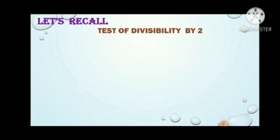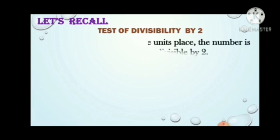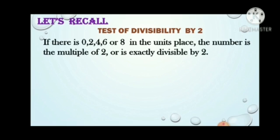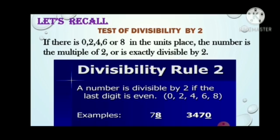Let's recall. Test of divisibility by 2. If there is 0, 2, 4, 6 or 8 in the unit's place, the number is a multiple of 2 or is exactly divisible by 2. In shortcut, we can say a number is divisible by 2 if the last digit is even. As you all know, 0, 2, 4, 6, 8 are even numbers.